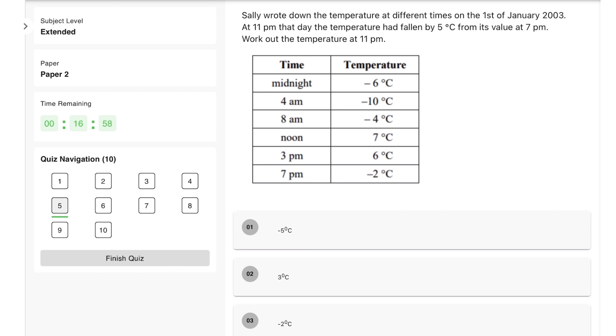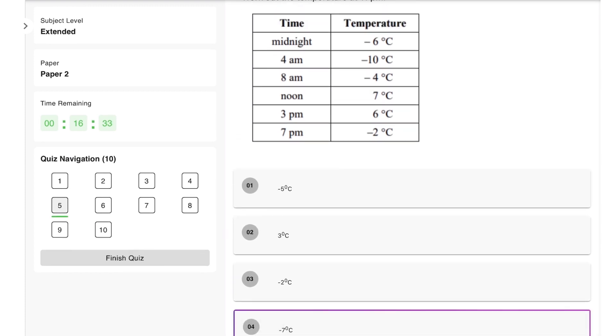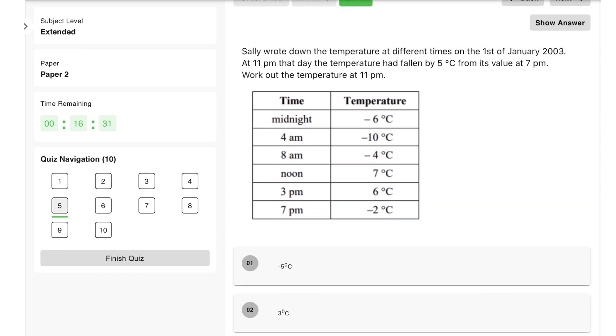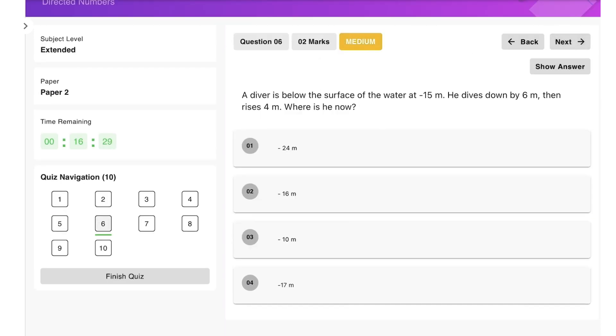Moving on, Sally wrote down the temperature at different times on the 1st of January 2003. At 11 p.m. that day the temperature had fallen by five degrees from its value at 7 p.m. We can see the value at 7 p.m. is negative 2. If it had fallen by five degrees, that's going down, so that's negative 7 degrees, which is option four.